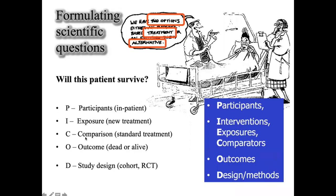Then these four elements describe a structure that you can use to frame your research question. And the study design can be a cohort study or a randomized control trial.